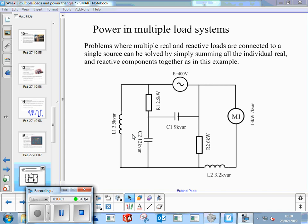Power in multiple load systems. Problems where multiple real and reactive loads are connected to a single source, like at a distribution point in a switchroom. You've got a main incomer that's got several loads connected to it. You can solve these by simply summing up all the individual real, reactive, and components together, and then calculate an overall apparent power as well.